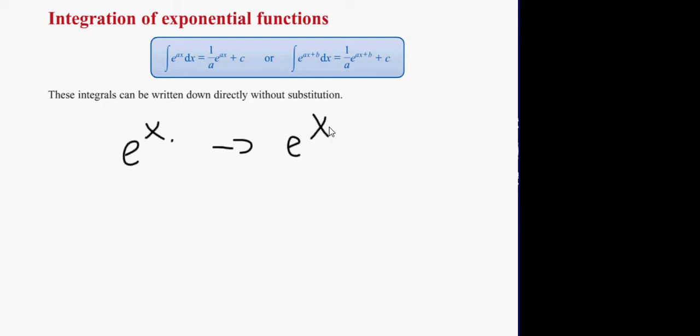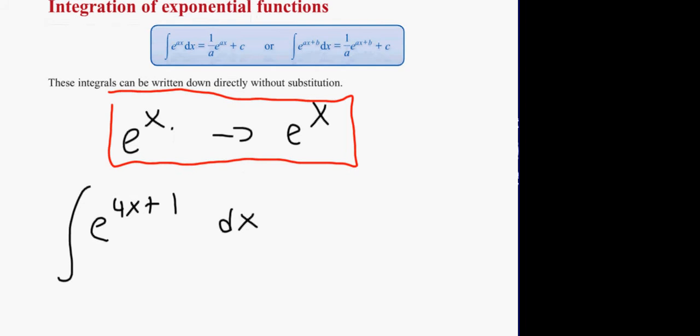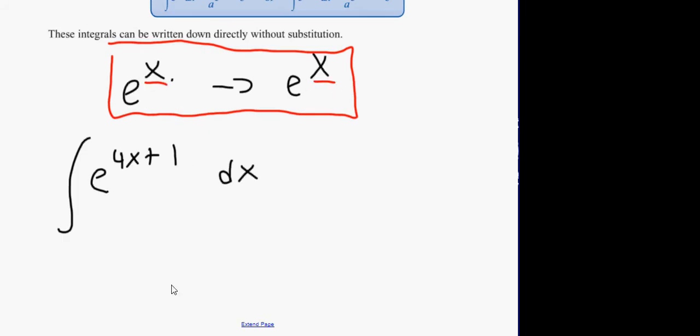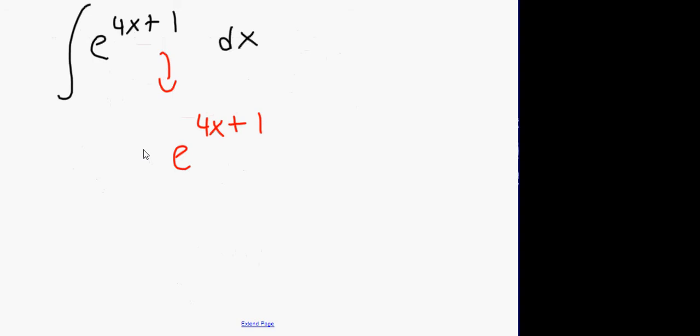The first example would be integrating e to the 4x plus 1 with respect to dx. Now, I look at my tables in the exam, and this is a different type of question. But what I'm very much aware of is that the power doesn't change. So, straight away, I can say e to the 4x plus 1 is in the integration. Now, if I was to differentiate that, what would happen? You'd end up having a 4 out in front as well, wouldn't you? So, you need something to take away from that 4.